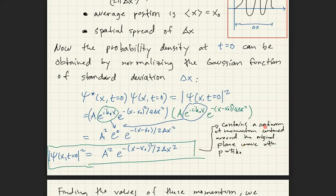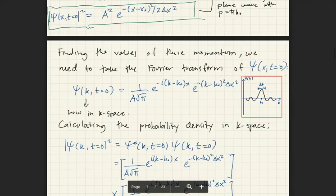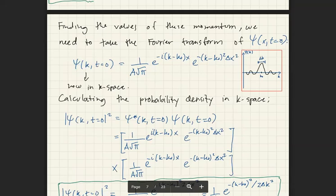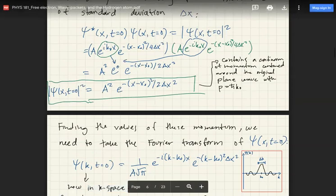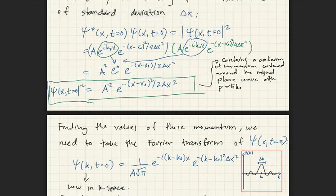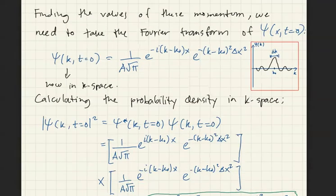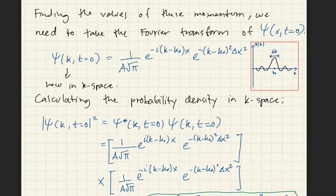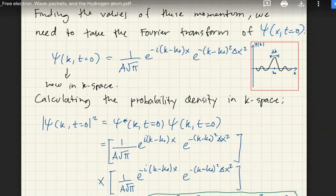This wave function contains a continuum of momenta around the original plane wave with momentum h-bar k naught. To find the momentum values, we need to express the wave function in terms of k using a Fourier transform — transforming from position space to k-space. Using the Fourier transform, the wave function in k-space at t equals zero becomes 1 over square root of pi times e raised to negative i(k minus k naught)x minus (k minus k naught) squared delta x squared.